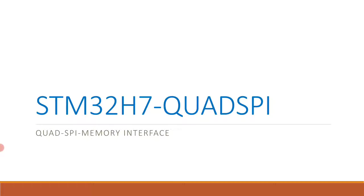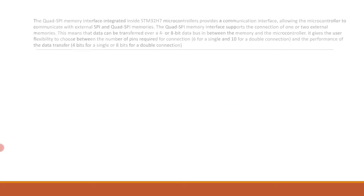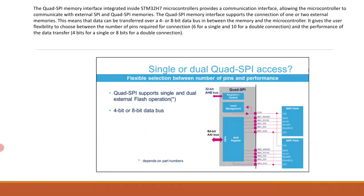The Quad SPI memory interface supports connection of one or two external memories. Data can be transferred over a four or eight-bit data bus between the memory and microcontroller, giving the user flexibility to choose between six pins for a single connection or ten pins for a double connection, and performance of four bits for single or eight bits for dual. The 32-bit AHB bus connects to register control, and the 64-bit AXI bus connects to shift registers and FIFO.